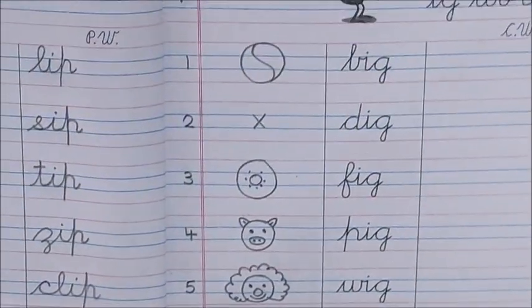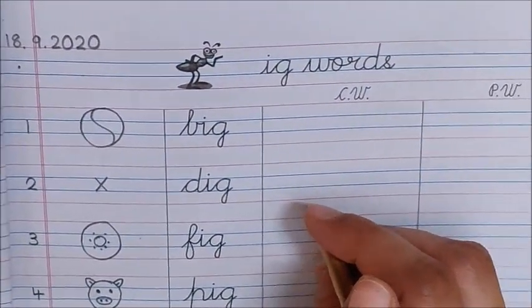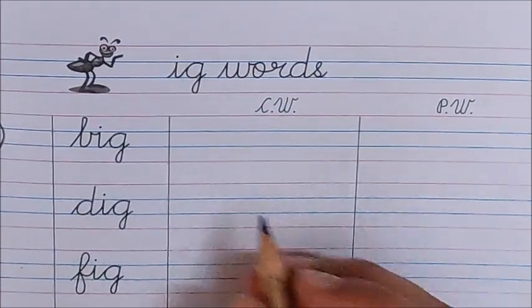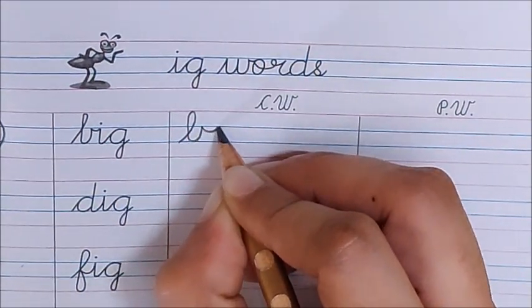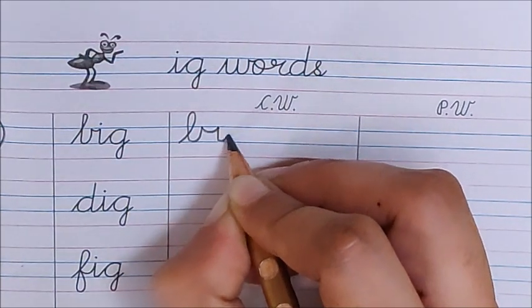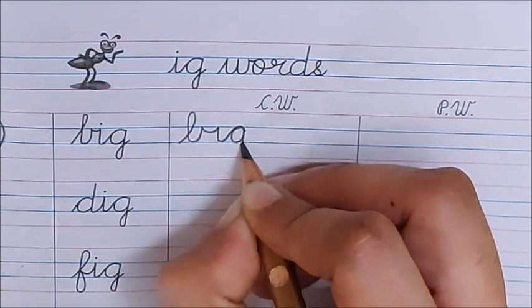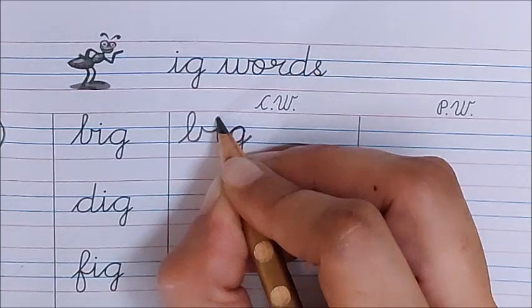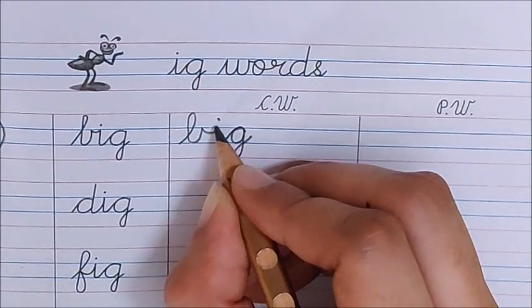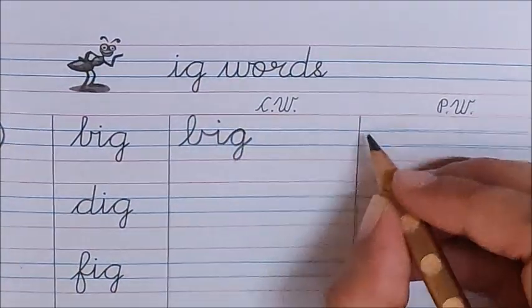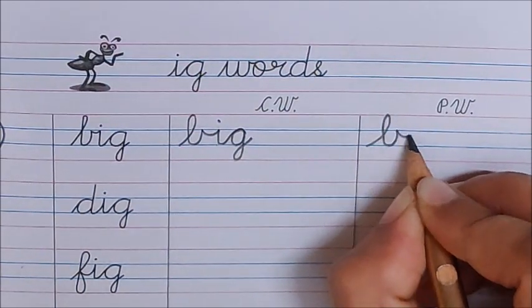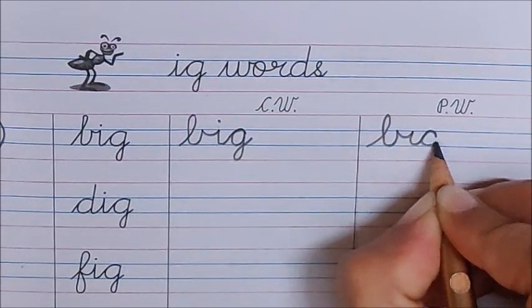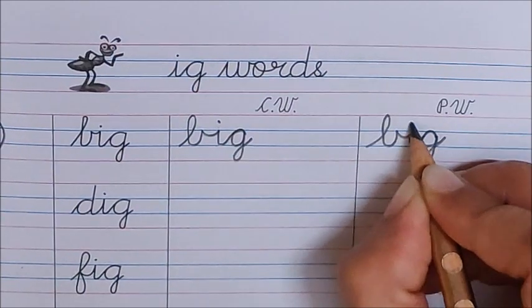Okay children, now time to do writing. What is the first word? Big. Say and write with me children. B, take the smiley up, now go down. I. G. Big. Don't forget to put dot for letter I. One more time. B, I, G. Big.